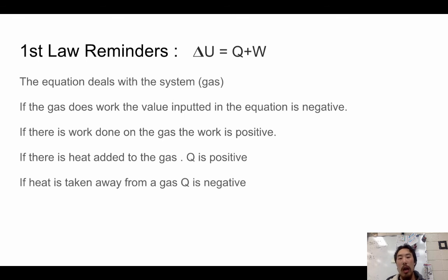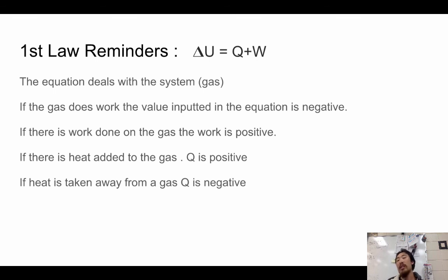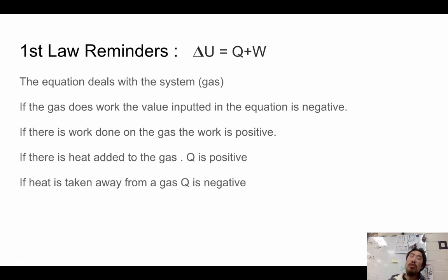A couple of reminders: this applies mainly to gases. If the gas does work, the value is entered as negative; if work is done to the gas, the value is positive. If heat is added to the gas, Q is positive; if heat is taken away, Q is negative. You can add heat by lighting a fire underneath or using a hot plate, and remove heat using a metal conductor or an ice bath.